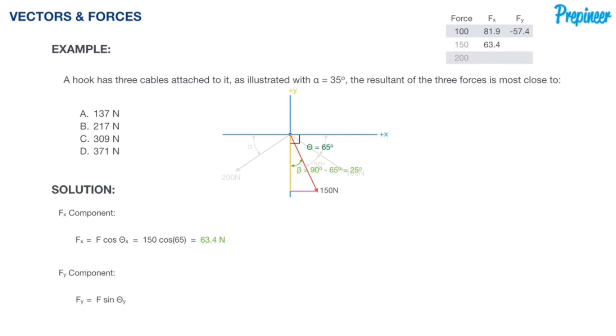Now we have beta or theta of y, whatever you want to call it. We have the force, we just have to plug that data in. As you can see I actually corrected my mistake. Negative 150 times cosine of 25 degrees, we get a force of negative 135.9 Newtons. I just put that data into that little table up there because we will be referring back to it.